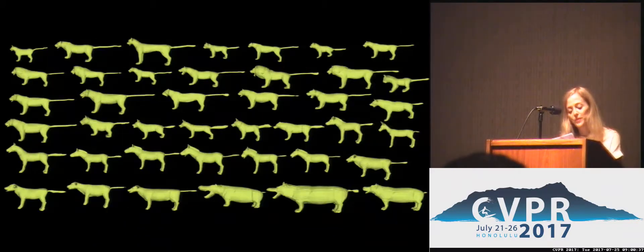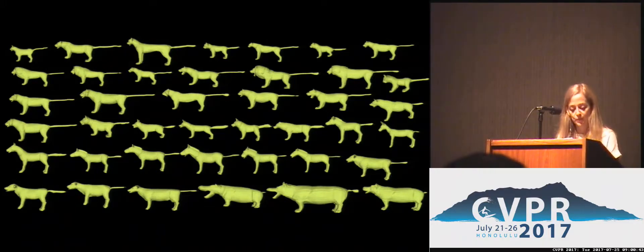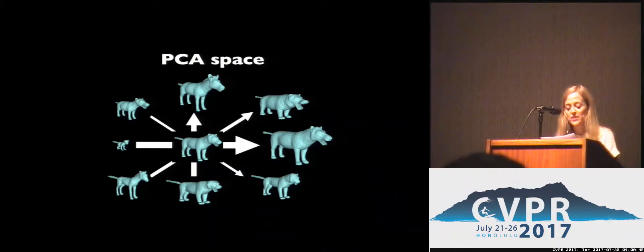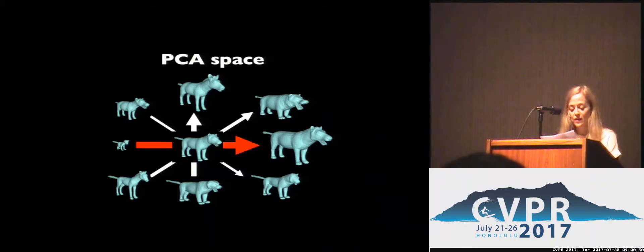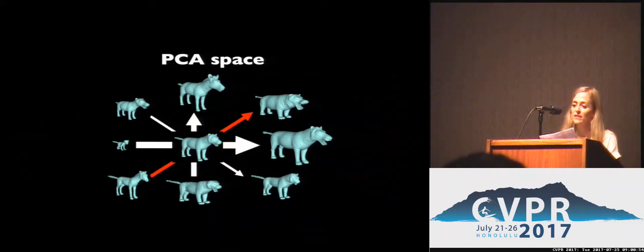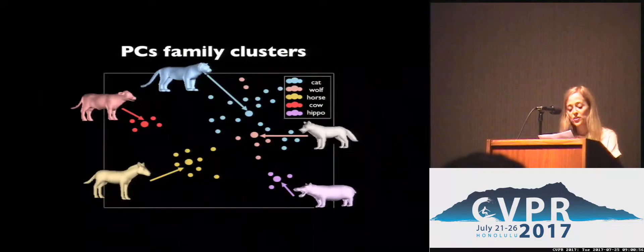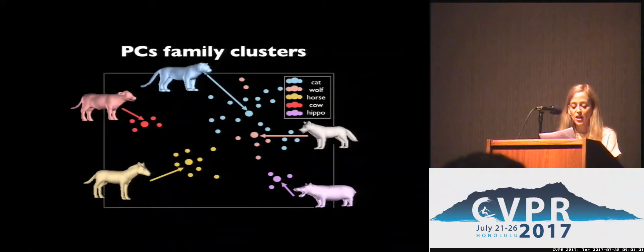Finally, we bring the alignments to a common pose and build the animal shape space with principal component analysis. This is how the space over animals of different families looks. The first dimension is size, then we have a zebra-lion dimension, then a horse-hippo dimension, and so on. If we look at the first eight principal components of the toys in a 2D visualization, we see clear per-family clusters.